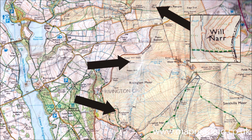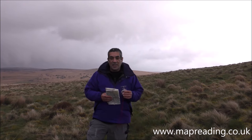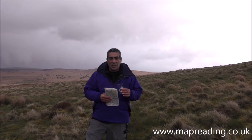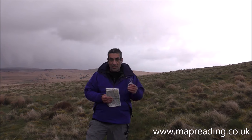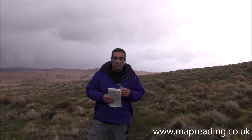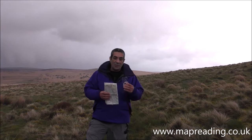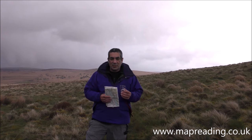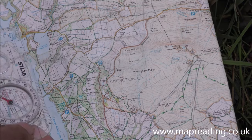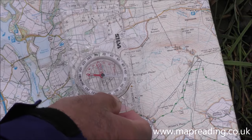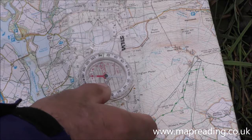...and in that direction I can make out a very definite contour feature which the map tells me is called Will Nah. I'm going to take a bearing from each of those and transfer it onto my map. Don't forget — transferring from a compass to a map requires you to adjust for magnetic declination.